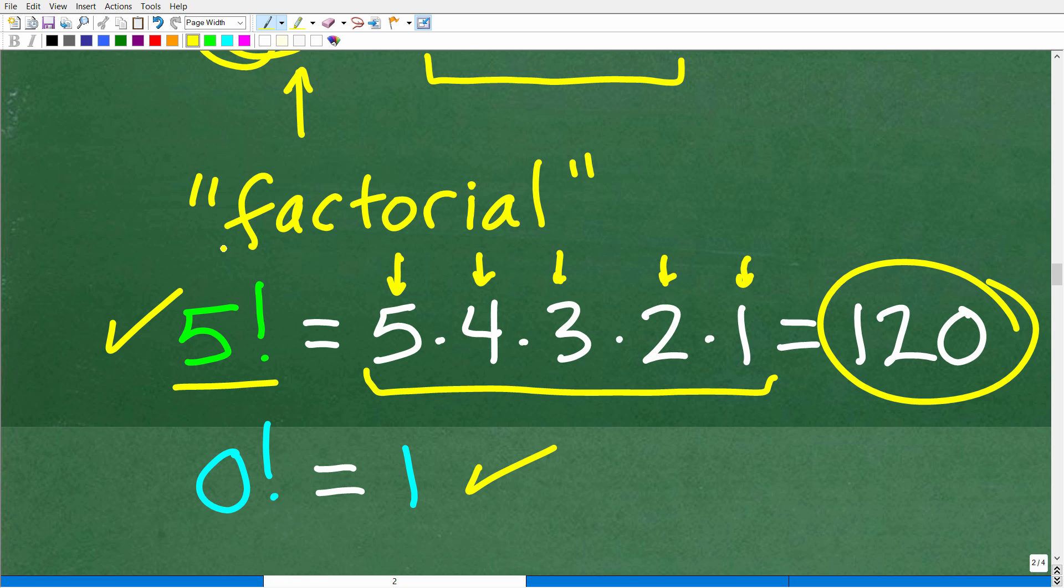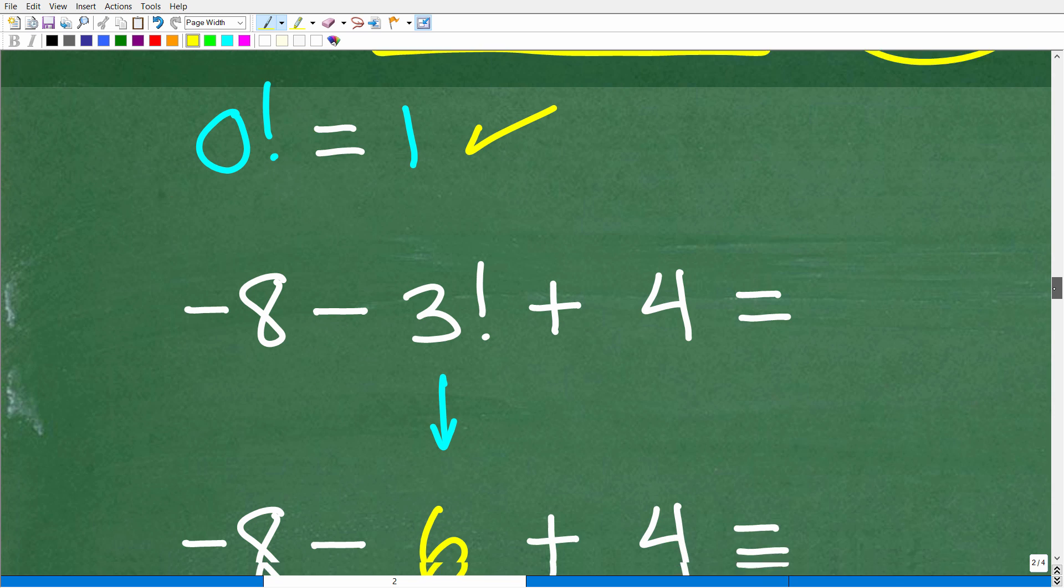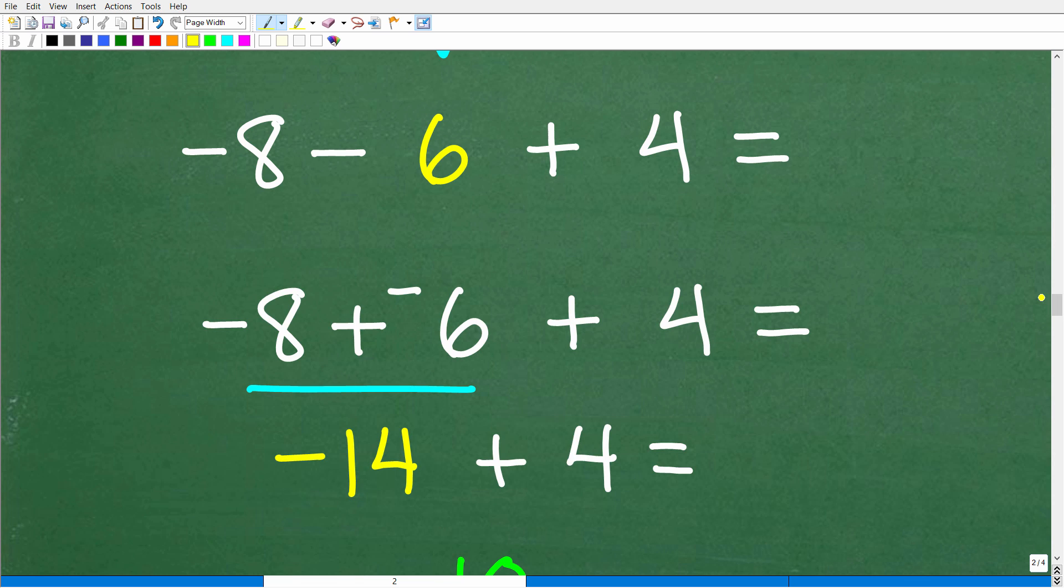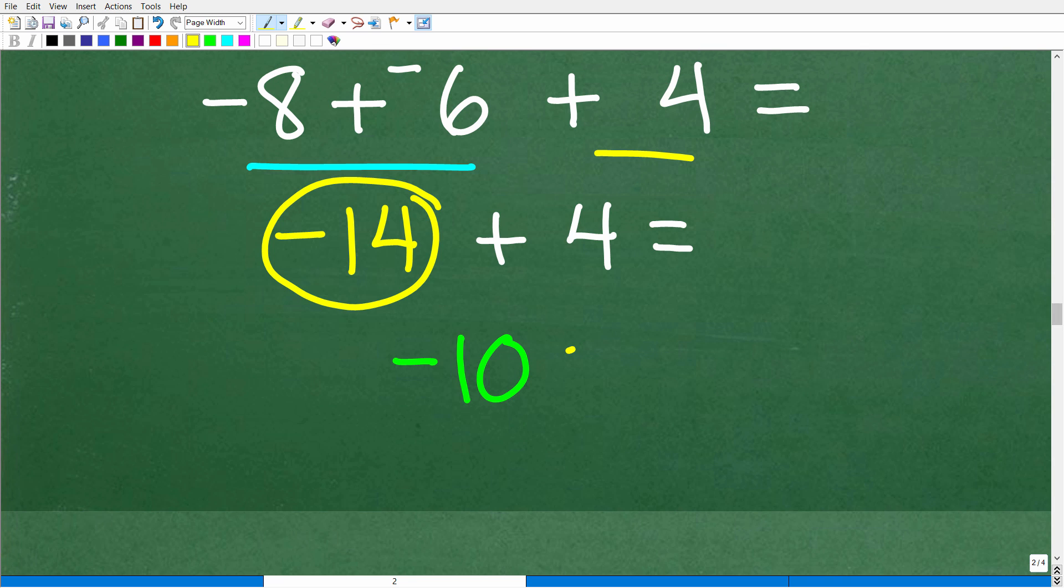Back to the problem. Now that we understand what factorial is, we have negative eight minus three factorial, we know that now is six, plus four. So now this is just a simple basic arithmetic problem involving positive and negative numbers. We could change this subtraction problem into an addition problem. We're just adding three numbers. Negative eight plus negative six is negative 14, and negative 14 plus this positive four gives us negative 10.